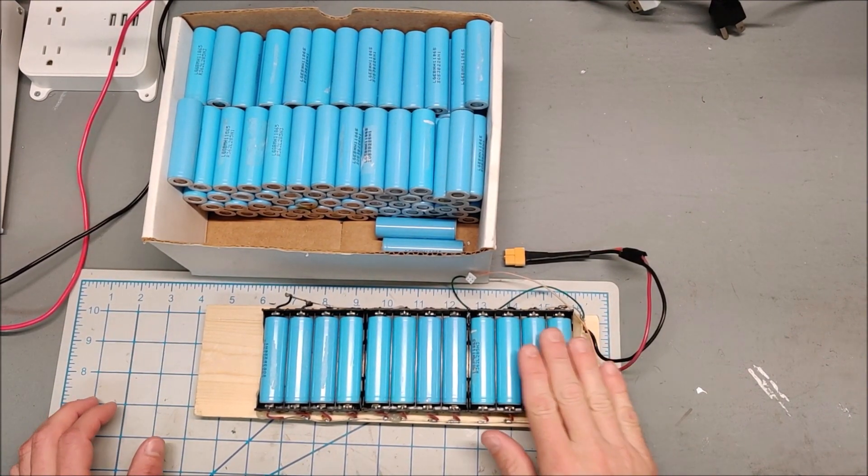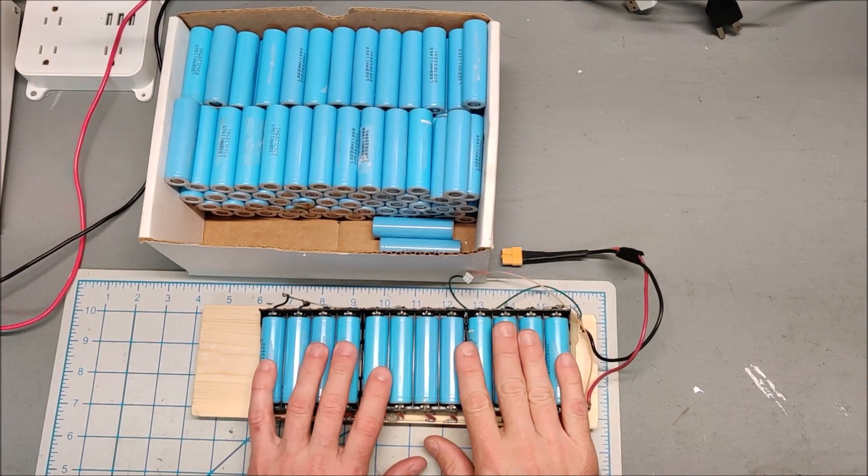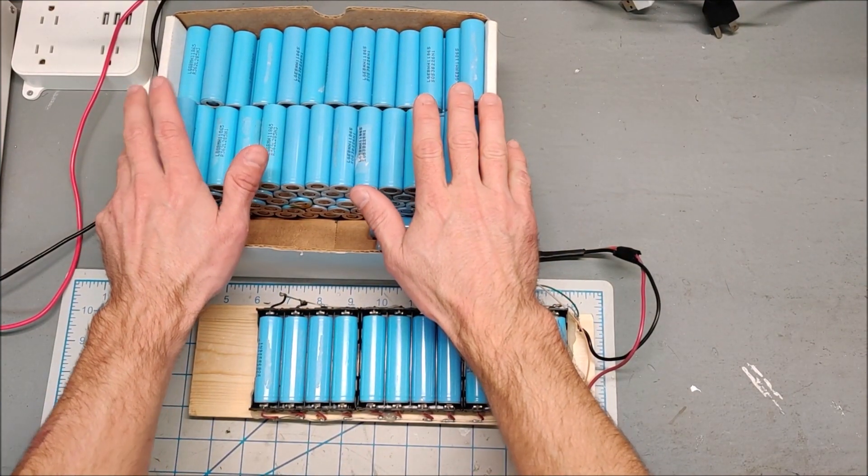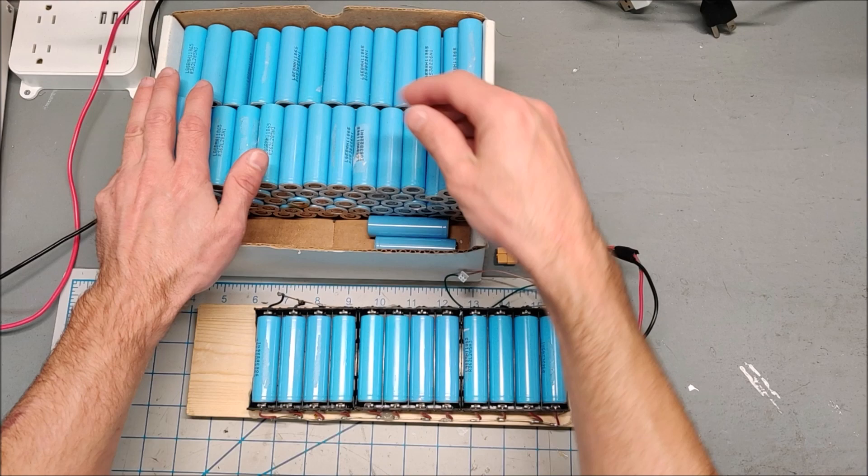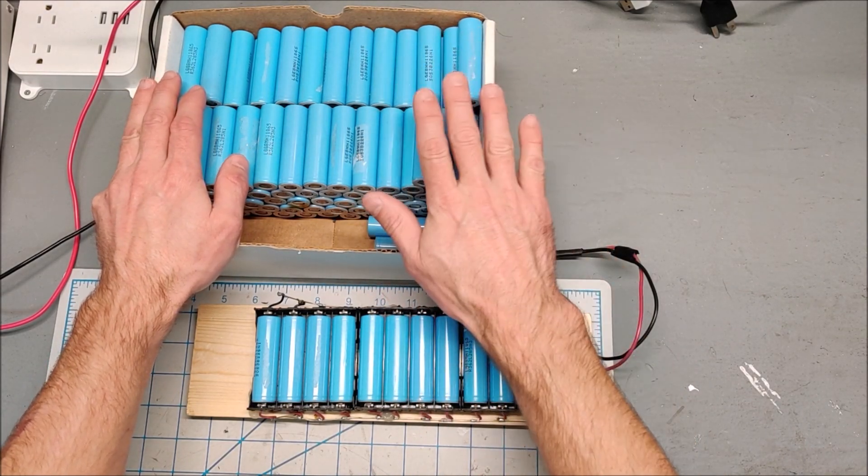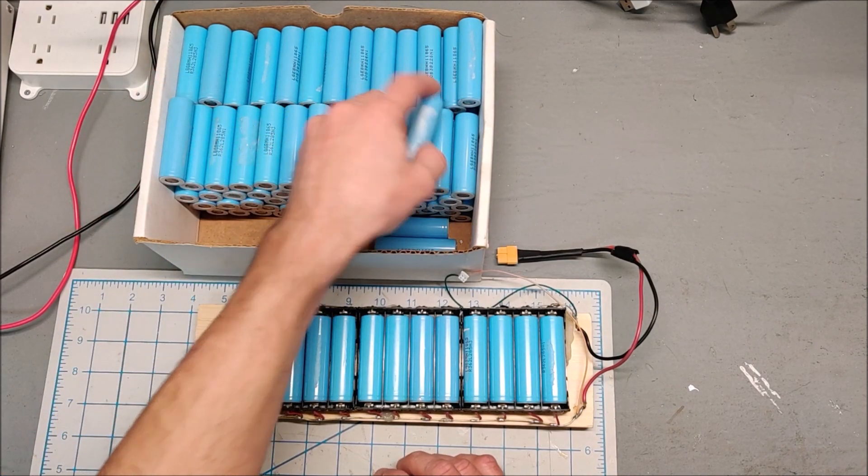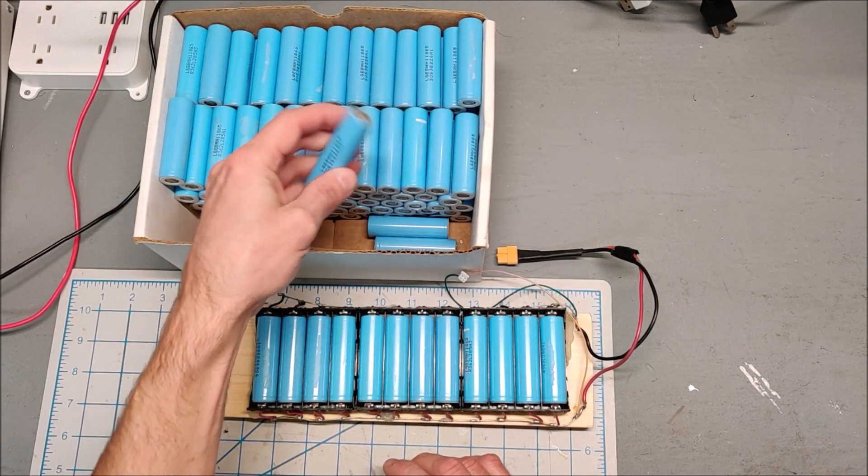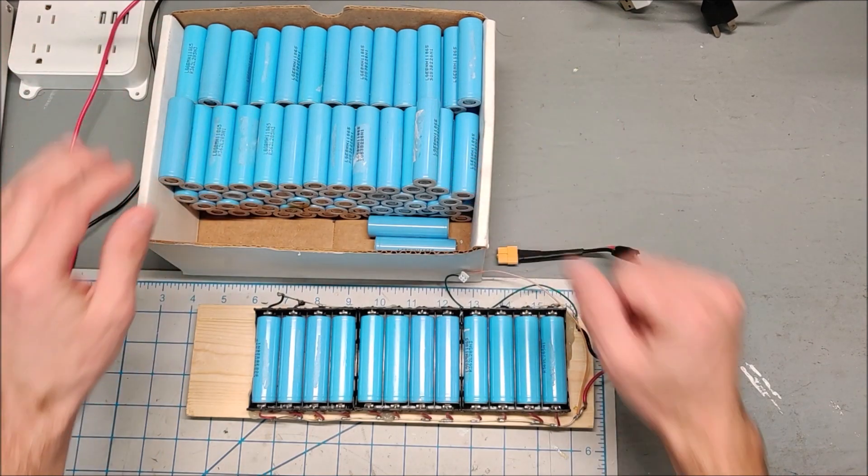I am in the middle of processing some 18650s. These are coming out of scooter packs that I got from battery clearance warehouse, and these are really good cells. These are 3200 milliamp LG cells, and I'm in the middle of processing them.